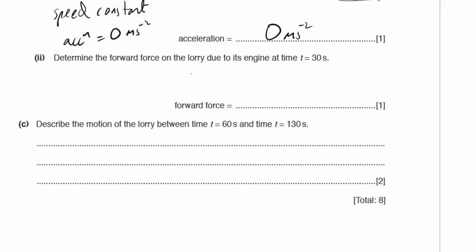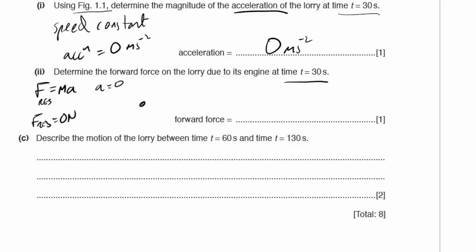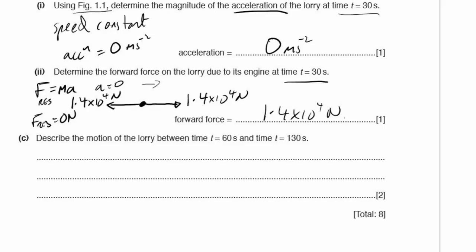Part B2: determine the forward force on the lorry due to its engine at t equals 30 seconds. Since acceleration is 0, F = ma gives a resultant force of 0 newtons. The resistive force is 1.4 × 10⁴ newtons acting against the motion, and since the resultant is 0, the forward engine force must also be 1.4 × 10⁴ newtons.